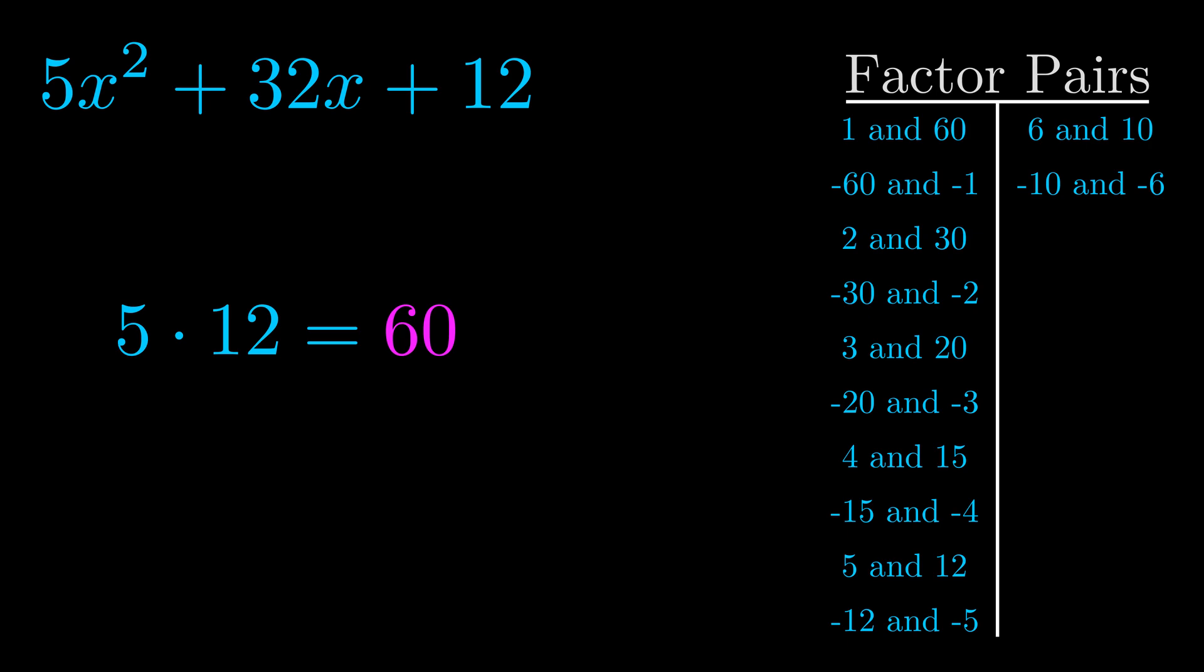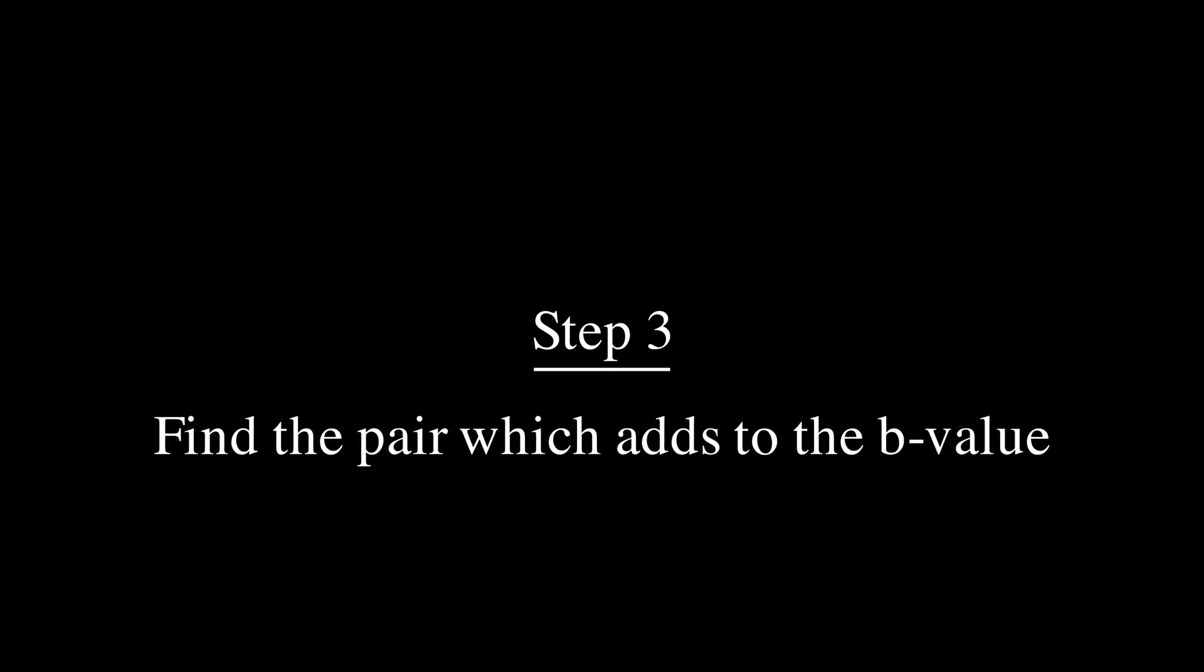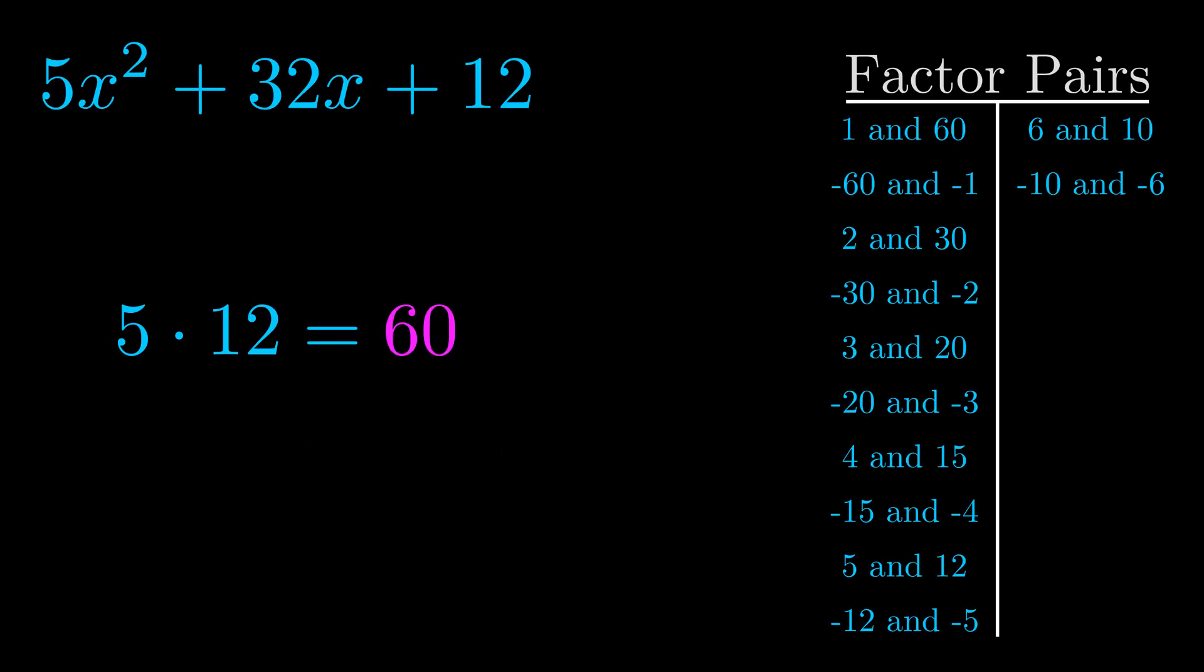Now once you have these factor pairs the goal is to find which of these pairs adds to the b value. The b value is the coefficient on the x term. That's the middle term, the one that we haven't done anything with yet. And really this is the only factor pair that we need.